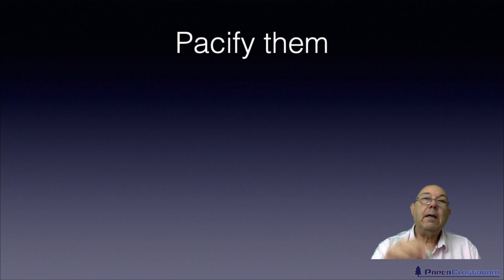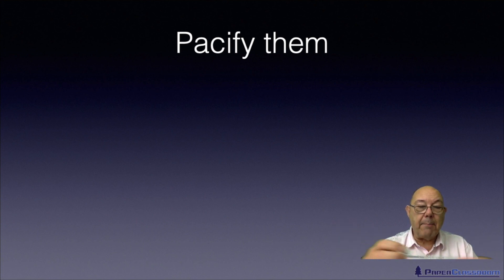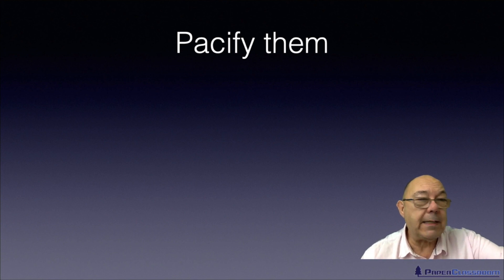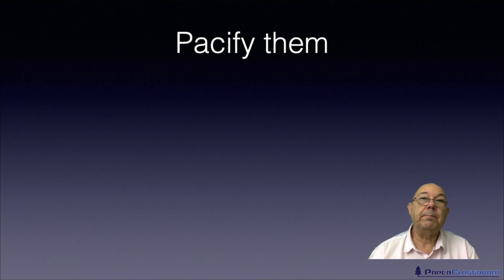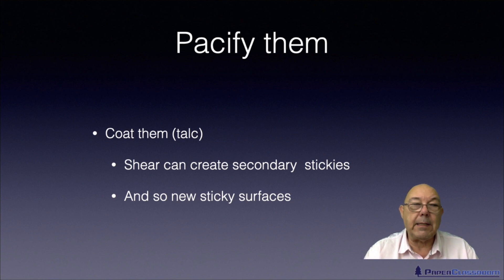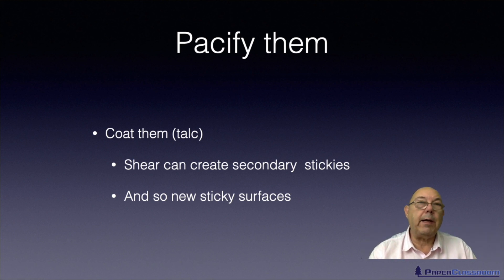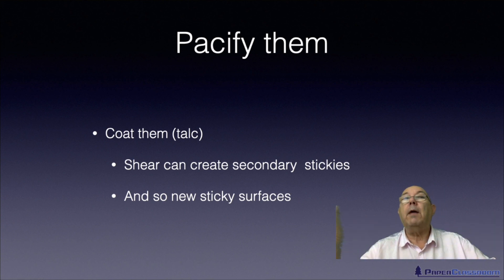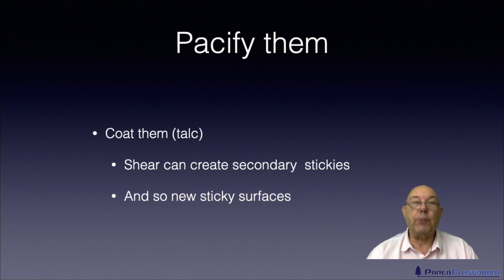The problem is if the sticky goes through a pump or through a screen, it gets torn up and you get more sticky surface area. So pacifying stickies isn't always the right answer. We coat them with talc, but shear can create what we call secondary stickies. You have a big primary sticky and when it goes through a pump or a screen, if it gets sheared and broken up into smaller stickies that are still damaging, we call those secondary stickies — and as you can see, it creates a new sticky surface.